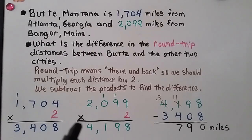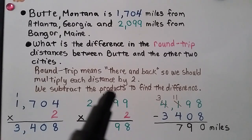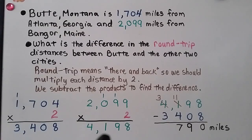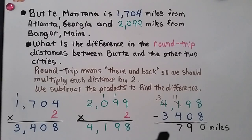Now for Bangor, Maine: 2,099 times 2. Starting in the ones place, 2 times 9 is 18 — regroup the 1, put the 8 down. 2 times 9 is 18 again, plus the regrouped 1 is 19 — put the 1 up and the 9 down. 2 times 0 is 0, plus 1 regrouped is 1. Then 2 times 2 is 4. We have 4,198. To find the difference: 4,198 minus 3,408 gives us 790 miles.